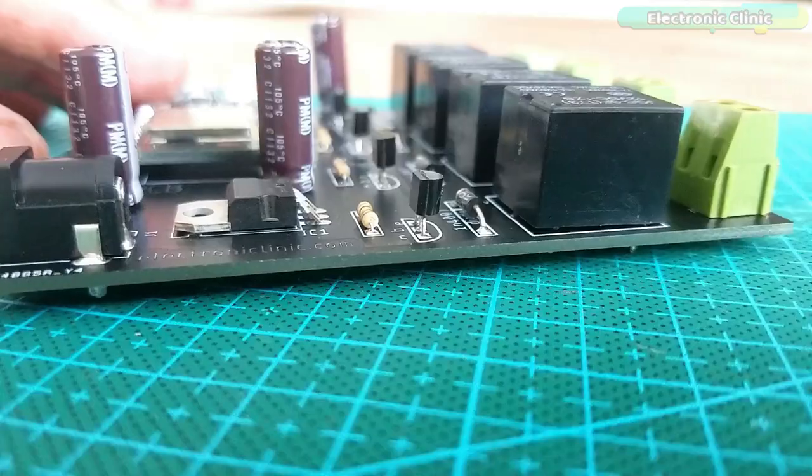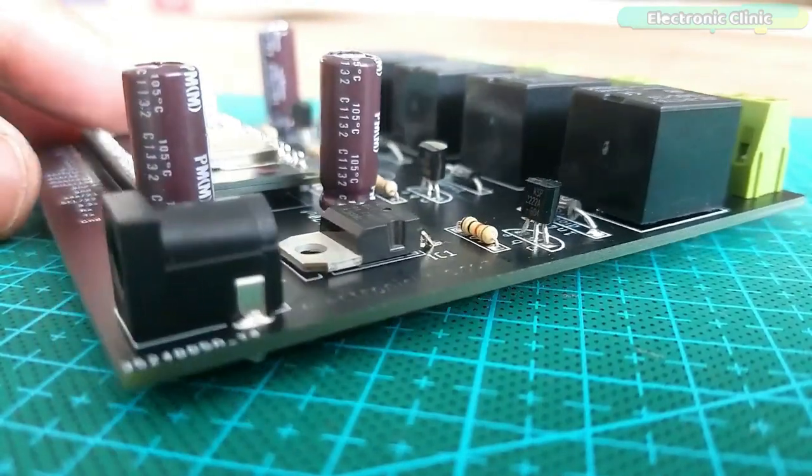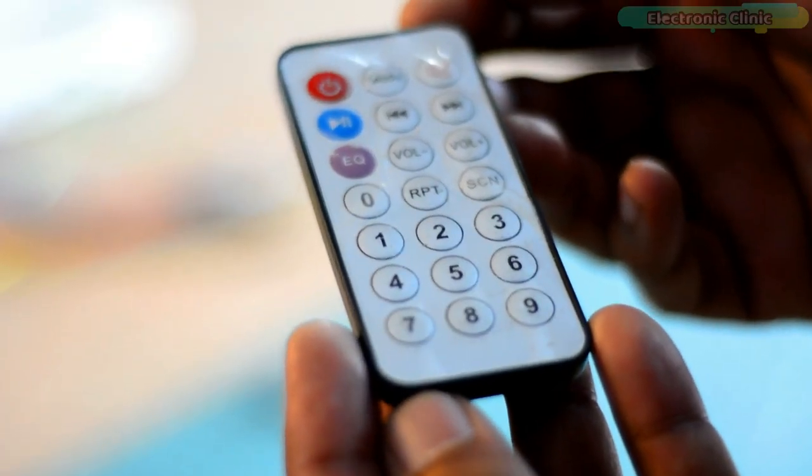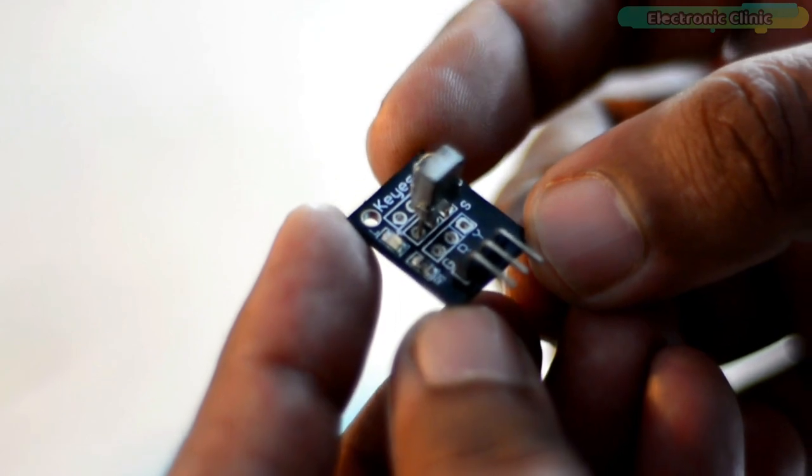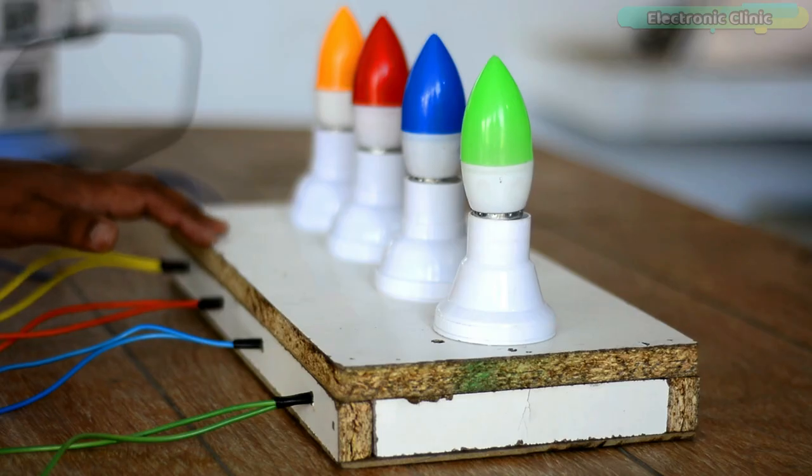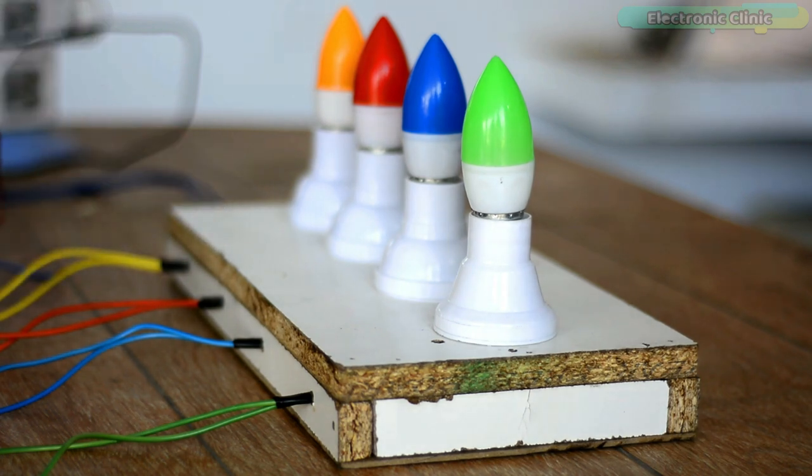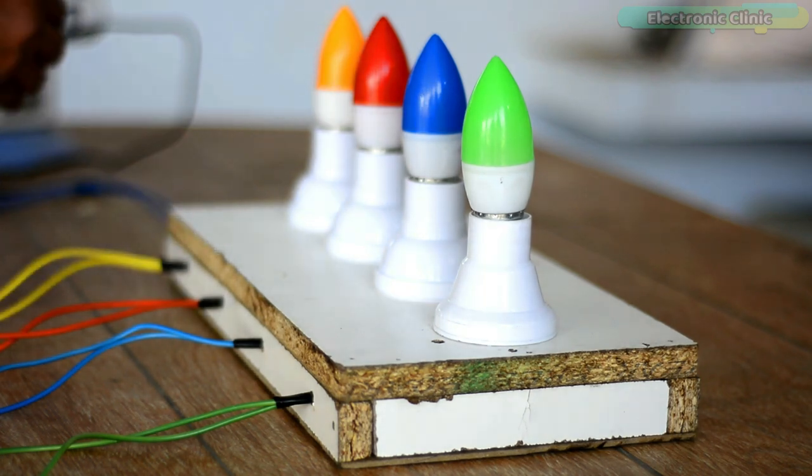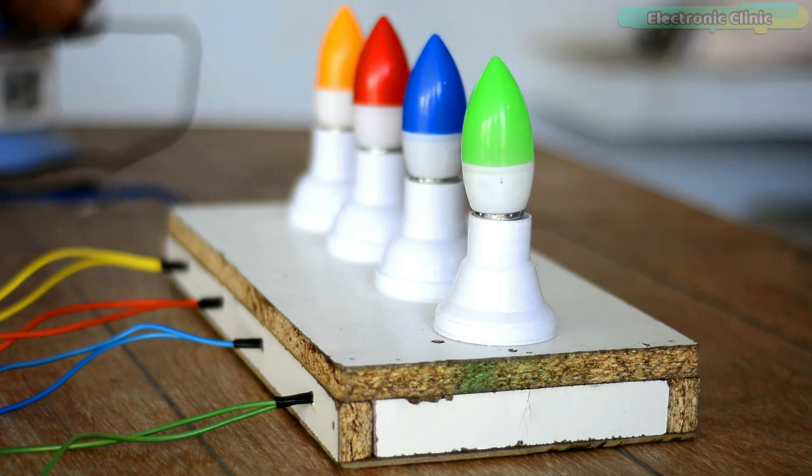Today I'm going to use the same ESP32 development board with this small size IR remote controller and IR sensor for controlling these four different colored 220 volt AC light bulbs. For demonstration purposes I'm using only four lights. If you want you can increase or decrease the number of lights or you can use some other electrical loads.